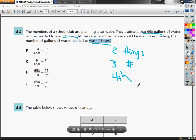The idea of setting up a proportion is I need to set one fraction up for one situation and one fraction up to the other and set them equal to each other. So I'm going to set up a ratio for something that I already know about. I know that for 650 gallons of water, I can wash 10 cars.